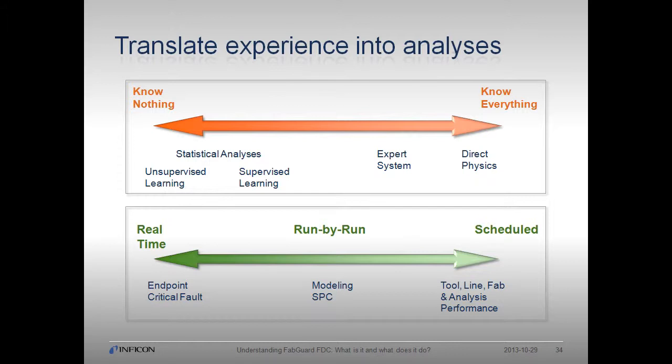From a time perspective, FabGuard can operate in real-time — analyses applied to each new data point as it's collected. Process endpoint or critical faults are generally performed using real-time analyses. FabGuard can also operate on a run-by-run or wafer-by-wafer basis; typical SPC reports and certain models are applied to summarized run-by-run data. Meta-analyses can also be scheduled to run periodically, such as an SPC health check, CP/CPKs, a Pareto of tool alarms in an area, or a list of current RF hours for each tool in a group for PM planning.